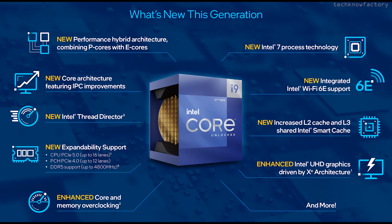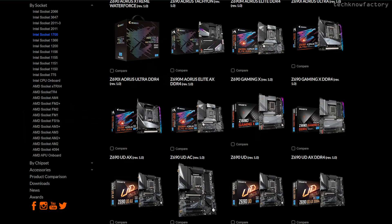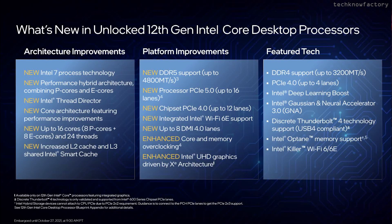Key improvements in 12th gen processors and motherboards include improved L3 and L2 cache, hybrid architecture, DDR4 and DDR5 support, and PCIe Gen 5. Motherboards come in DDR4 and DDR5 variants. The processor and motherboards support PCIe Gen 5, though only the higher-end boards include it.